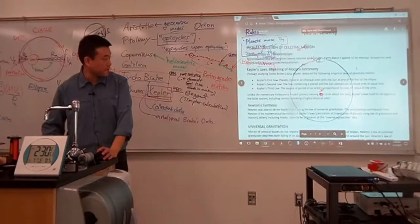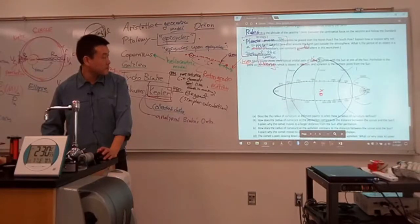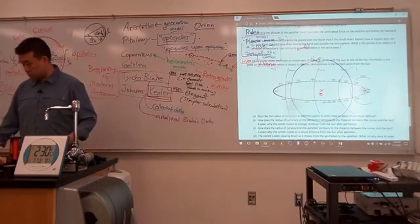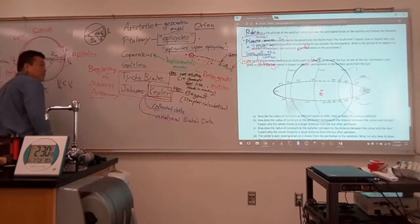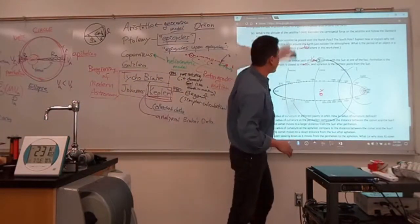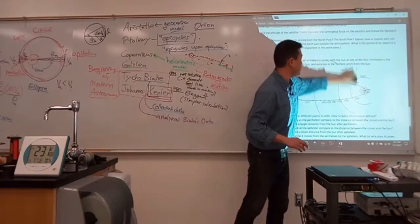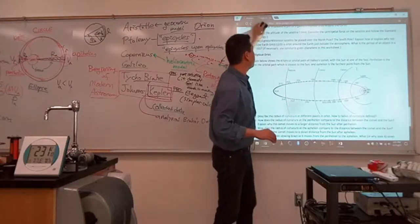So it's one of the things that's covered in the worksheet. This figure in your worksheet shows an orbit of not a planet, but orbit of a comet. This is an orbit of Halley's Comet.